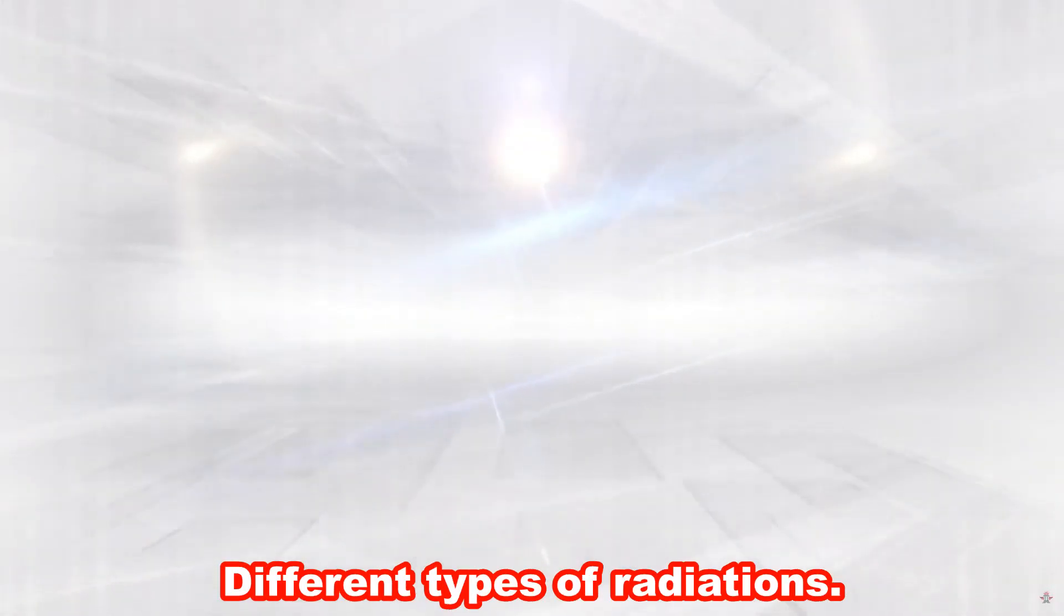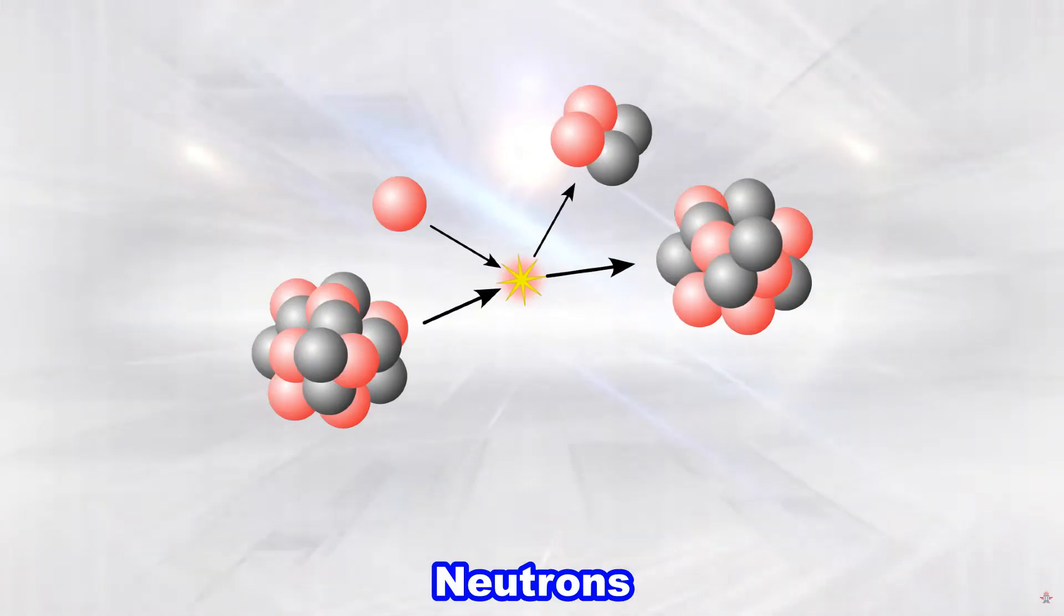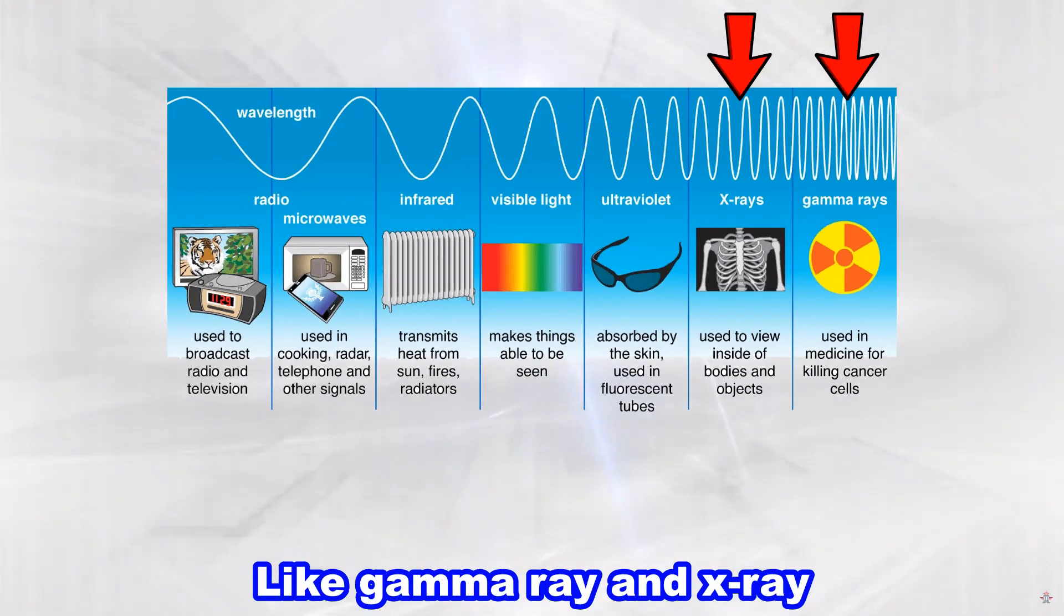There are four major different types of radiations. These are alpha, beta, neutrons and electromagnetic waves like gamma ray and x-ray.